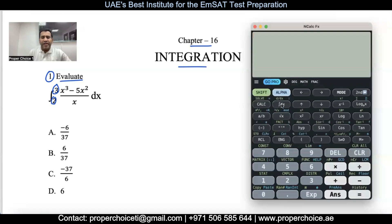You can find the integral below the alpha on your calculator. Press integral of dx, then type the equation: x³ - 5x² divided by x. Enter the lower limit of integration as 2 and the upper limit as 3. Press equals and you get the answer as -37/6, which matches option C.